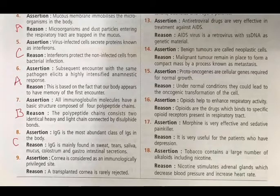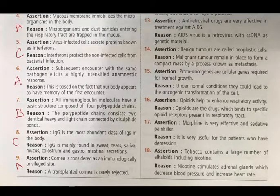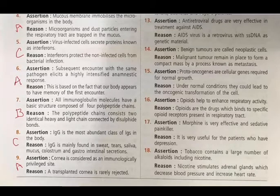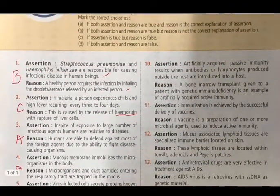Question 9 - Assertion: Cornea is considered an immunologically privileged site. Reason: A transplanted cornea is rarely rejected. Some transplanted tissues do not stimulate an immune response because lymphocytes do not circulate into the anterior chamber of the eye, making it an immunologically privileged site. Both are true and reason explains assertion. Answer: A.